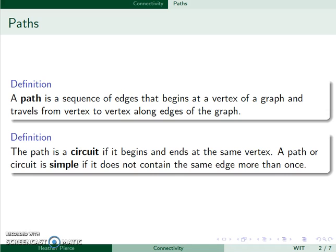The path is a circuit if it begins and ends at the same vertex. A path or circuit is simple if it does not contain the same edge more than once.